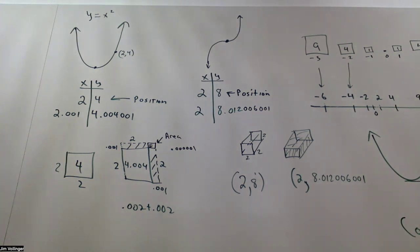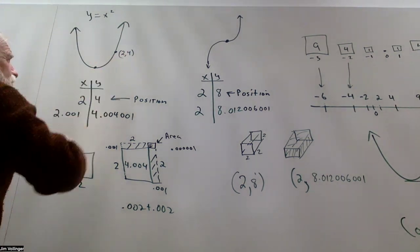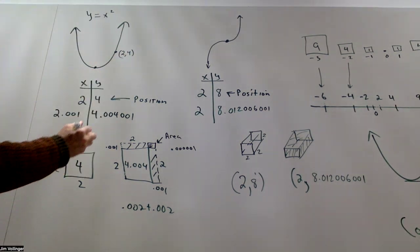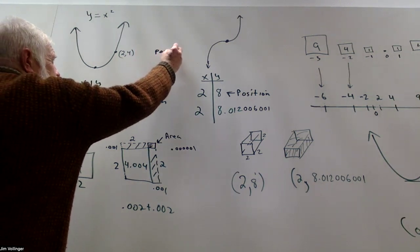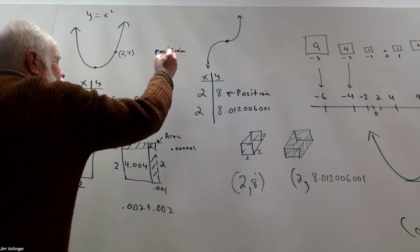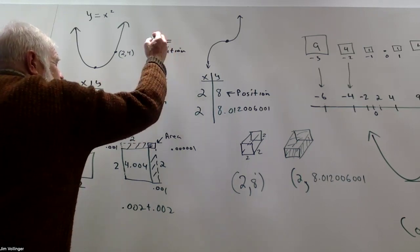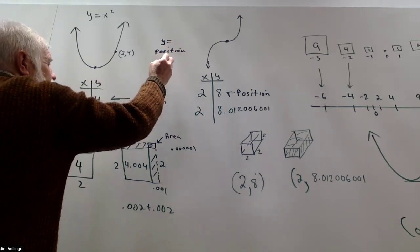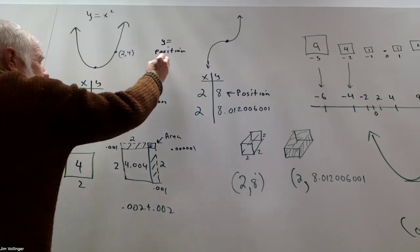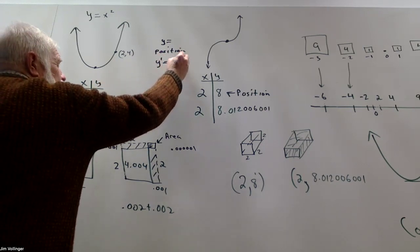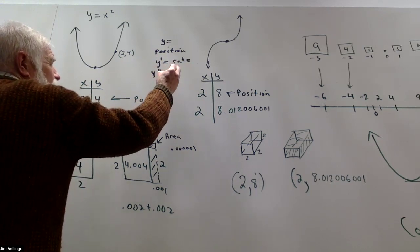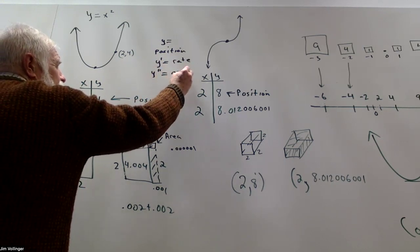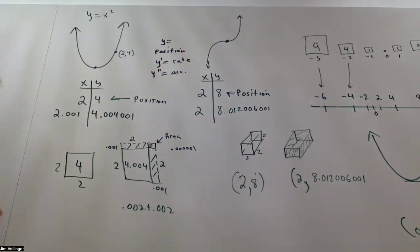We should be familiar with y equals x squared. Two gets you four. And in calculus, you might consider that a position function, just a y equals function. And y prime is the simplest notation designated for rate calculations. And y double prime is all about acceleration. So we have position, velocity, acceleration.